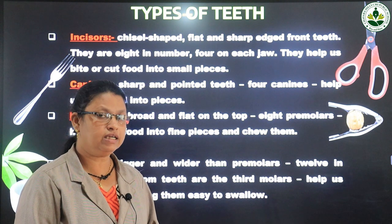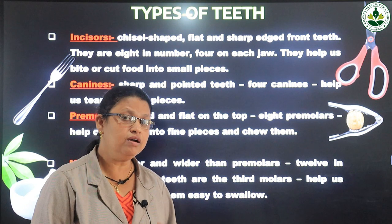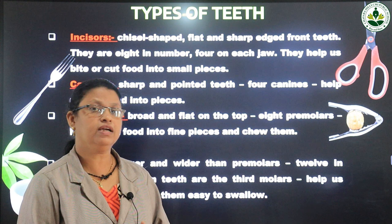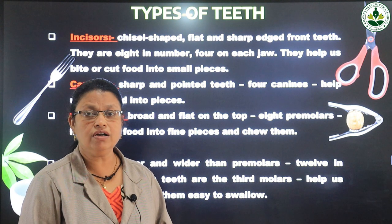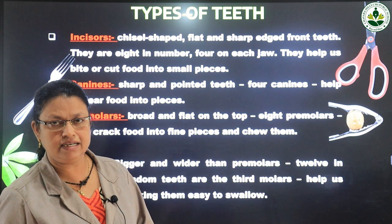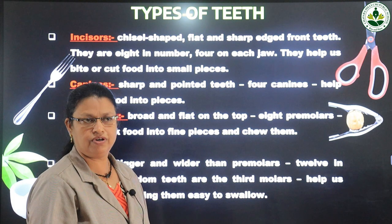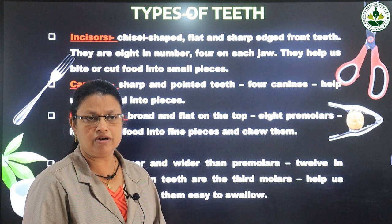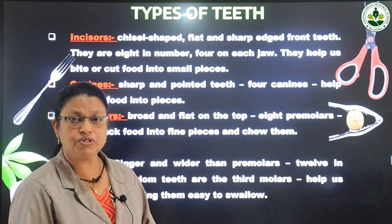The third category is premolars. There are eight premolars — they are broad and flat, and seen next to the canines. Four premolars are in the upper jaw and four in the lower jaw. Like a nutcracker that breaks nuts, premolars are used to crack and chew food into small particles.